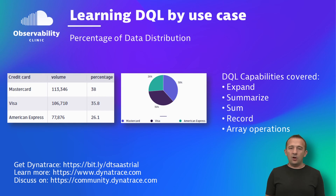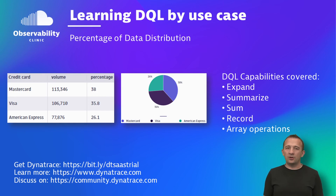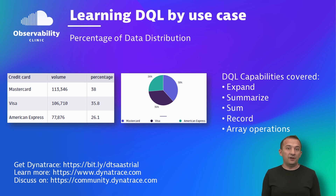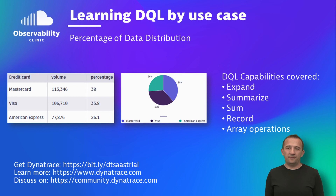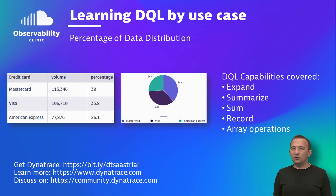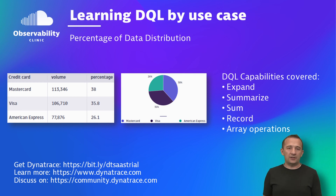A common use case I hear from our users is getting a percentage distribution of their data. The example I have here is revenue generated by payment provider. If we want to get a distribution percentage, we can use DQL to get this answer easily.